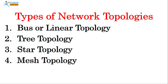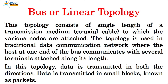Types of network topologies are: bus (or linear) topology, tree topology, star topology, and mesh topology. The first one is bus or linear topology. In this topology, a single cable — the transmission media, for example a coaxial cable — is required, to which the various nodes are attached. This topology is used in traditional data communication networks.